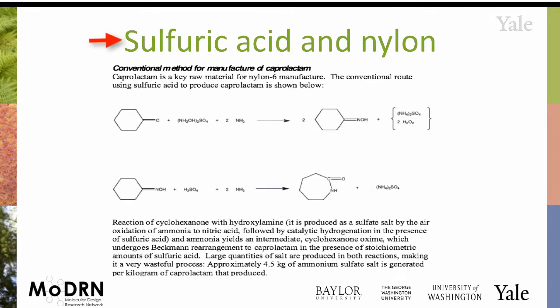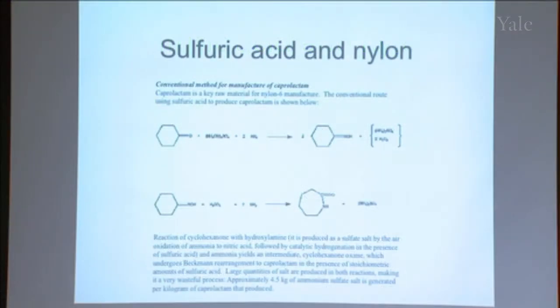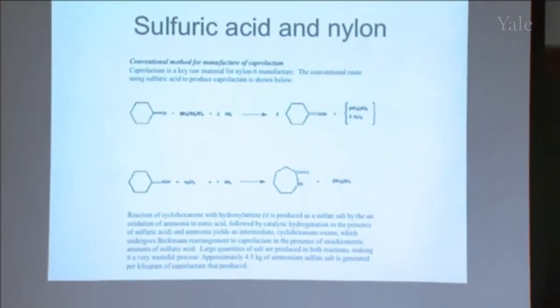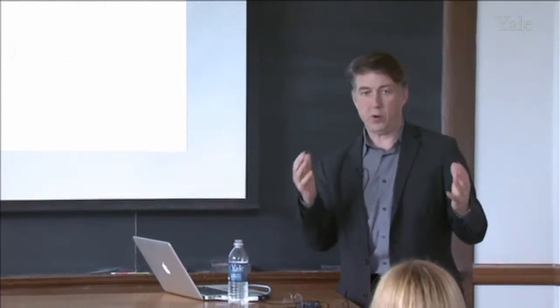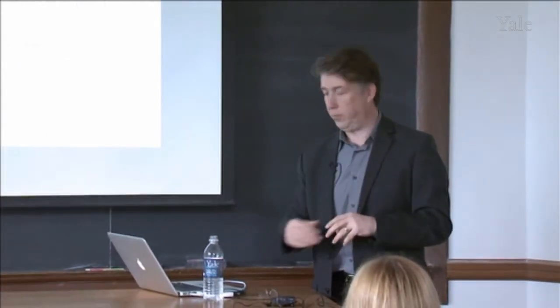Sulfuric acid is used in giant quantities and has historically always been used in giant quantities to make nylon. When you think of the volumes of nylon that are produced — and that it requires stoichiometric quantities of sulfuric acid in two different steps — you start thinking about the accident potential for those quantities of sulfuric acid.